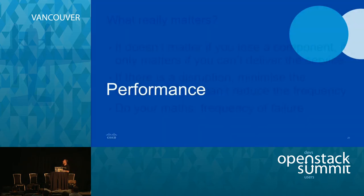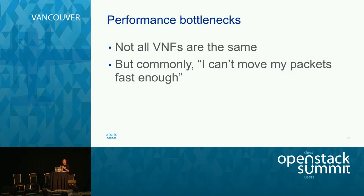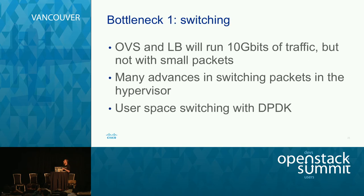Another point that came up designing NFV applications is performance. We talk about this over and over again in NFV — we're putting quite heavyweight applications into a cloud. Not all VNFs are the same: some are compute-intensive, a few storage-intensive, but commonly the problem is: I can't move my packets through this virtual machine fast enough. The first bottleneck is almost invariably the software switch on your server — OVS and Linux bridge will both move 10 gigabits quite happily.